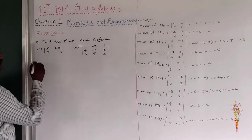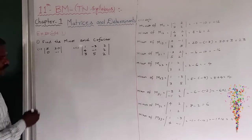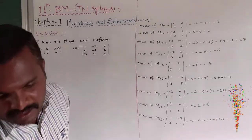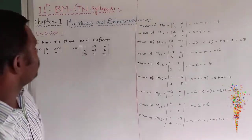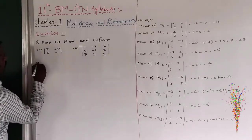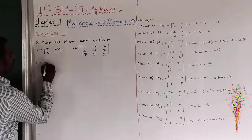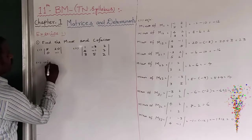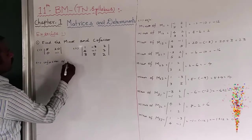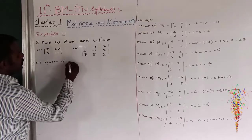The next one is cofactor. I want to find out the cofactor of the second question. What is the cofactor? First I want to take out the element a11, so the cofactor of a11.